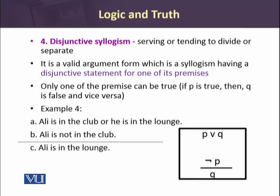Disjunctive Syllogism is an either-or kind of argument where only one of the premises can be true. It is a valid argument form having a disjunctive statement for one of its premises — if P is true then Q is false, and vice versa. Example: 'Ali is in the club or he is in the lounge. Ali is not in the club, therefore Ali is in the lounge.' The disjunction sign V is used to represent either-or in traditional logic: P or Q; not P, therefore Q.